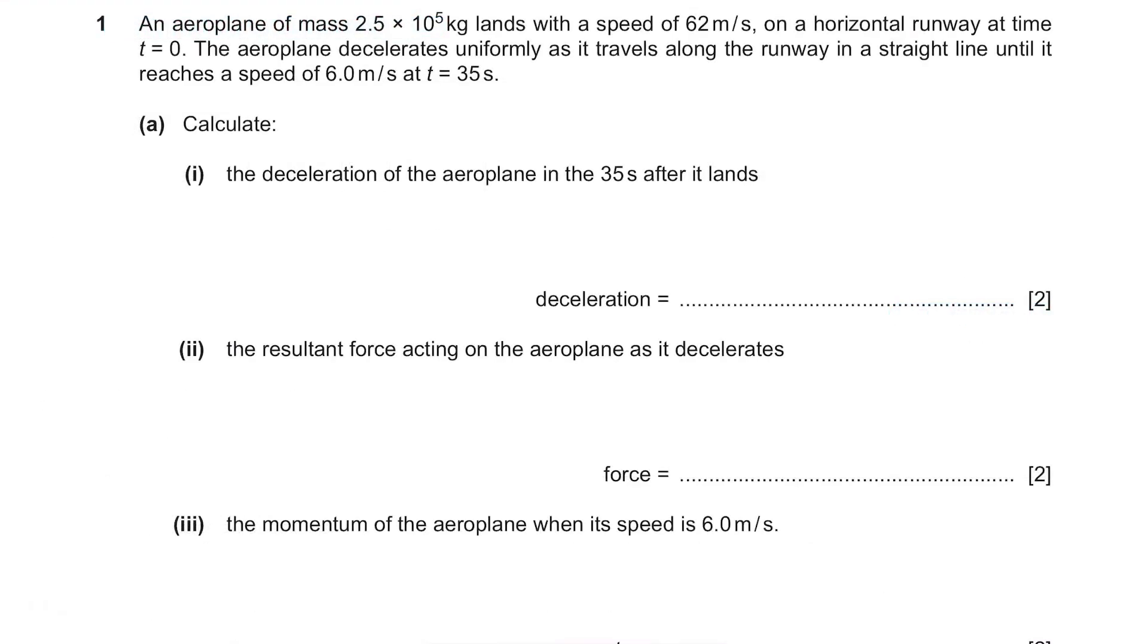An aeroplane of mass 2.5 times 10 to the power of 5 kg lands with a speed of 62 m per second on a horizontal runway at time t equals 0.